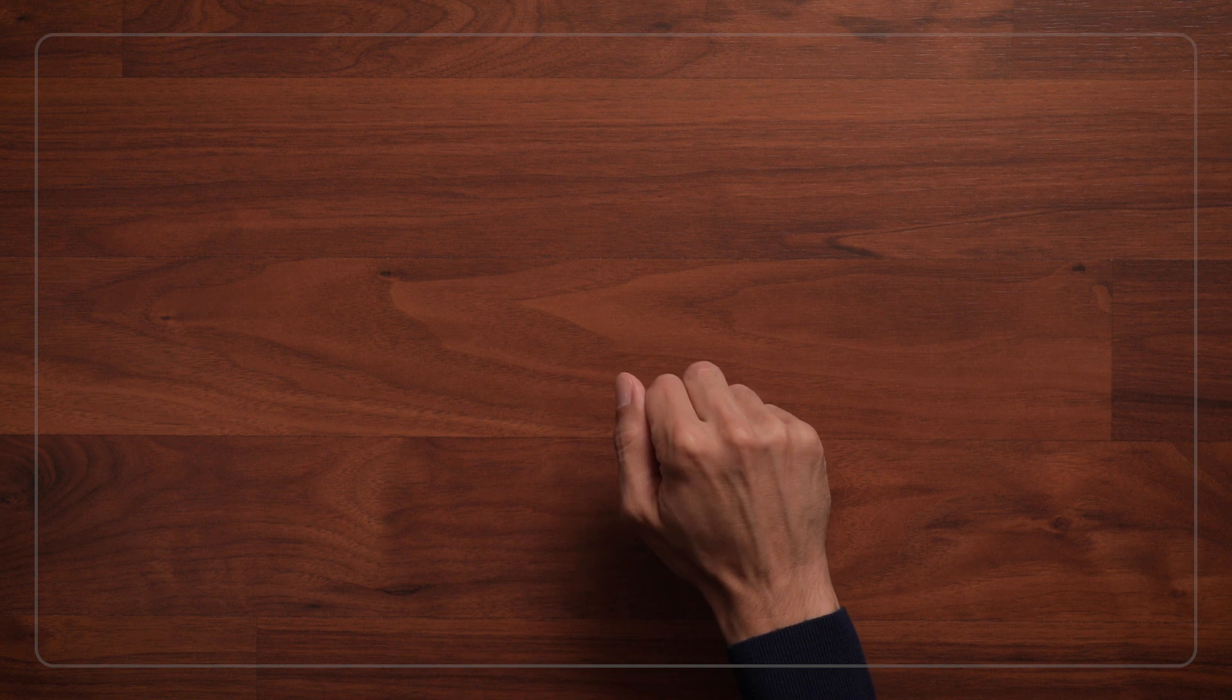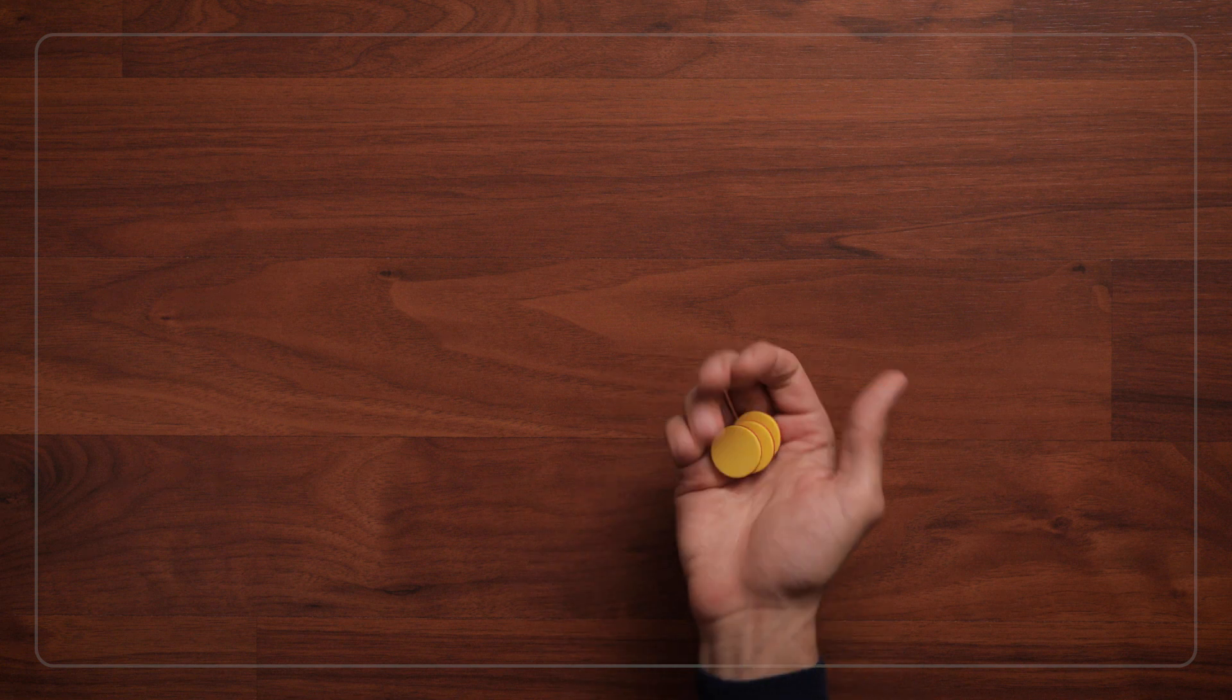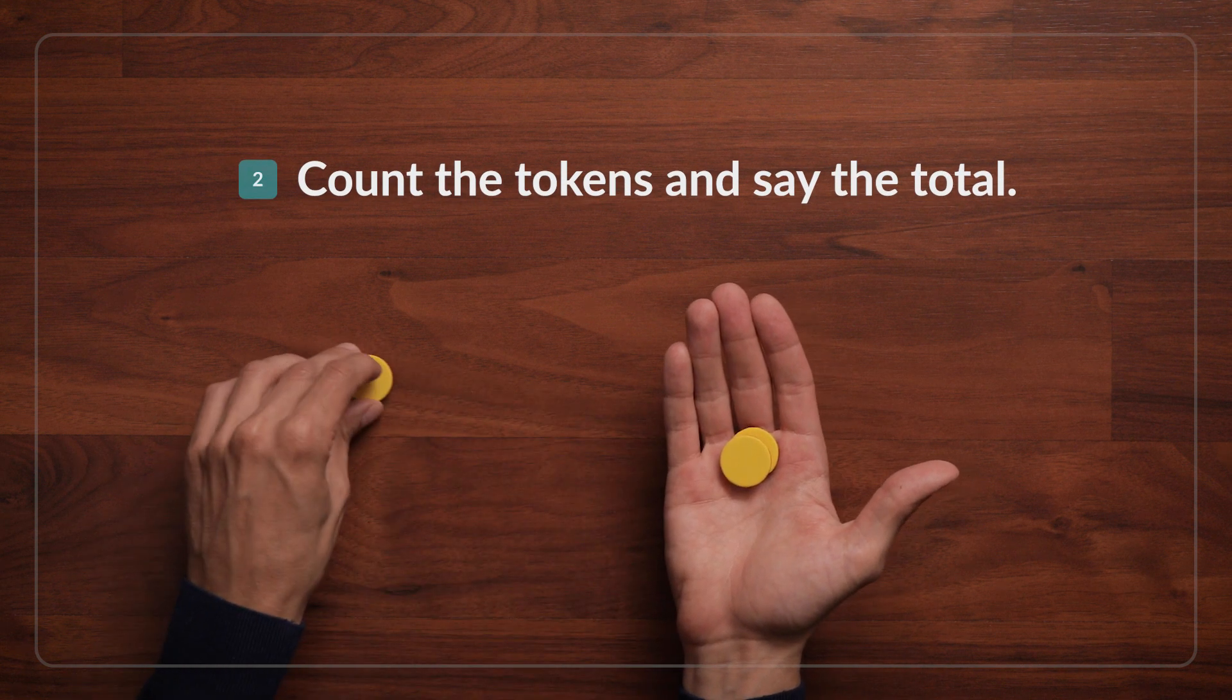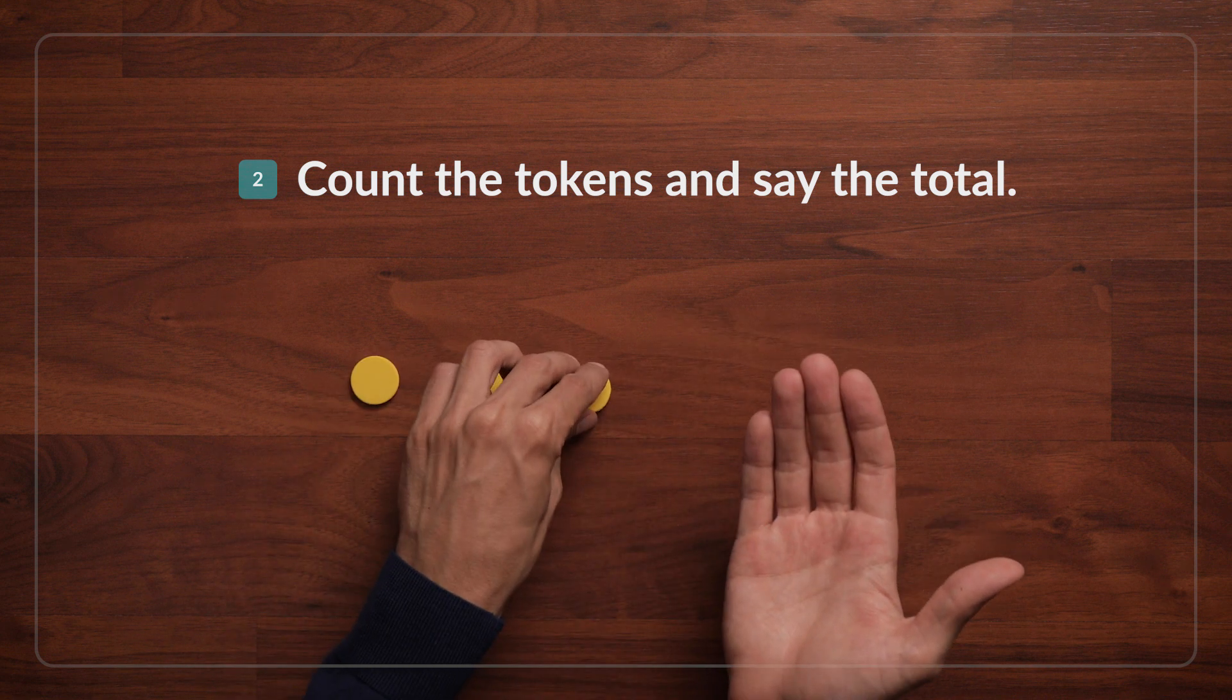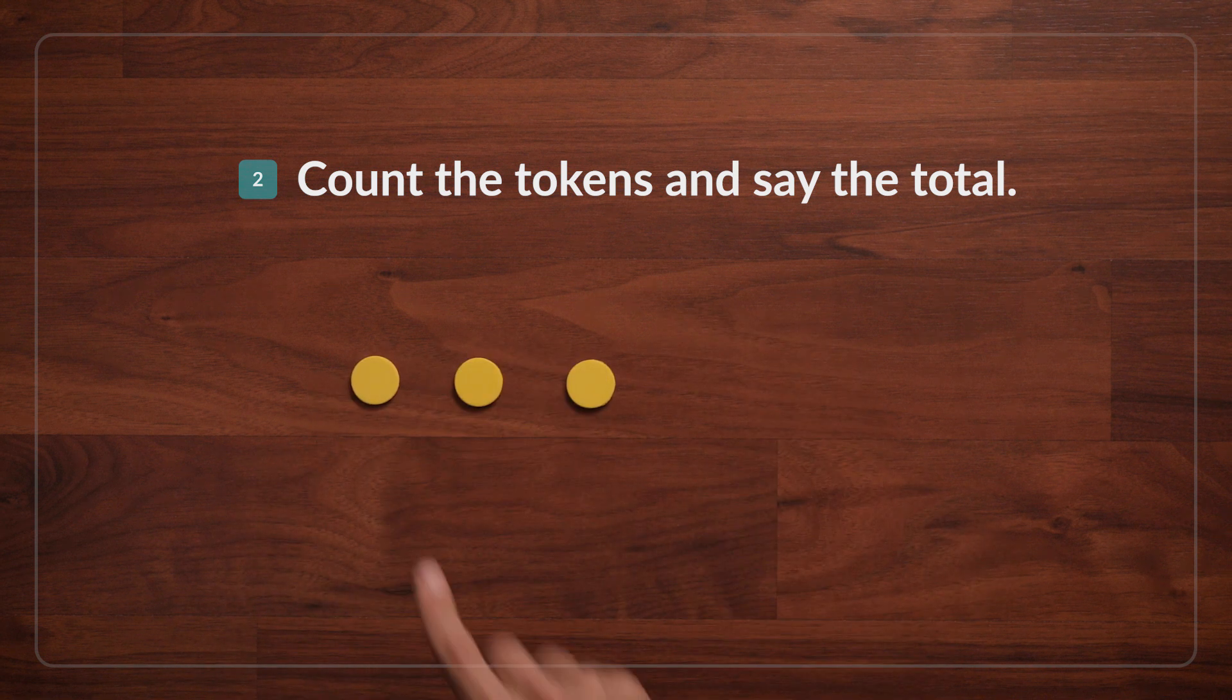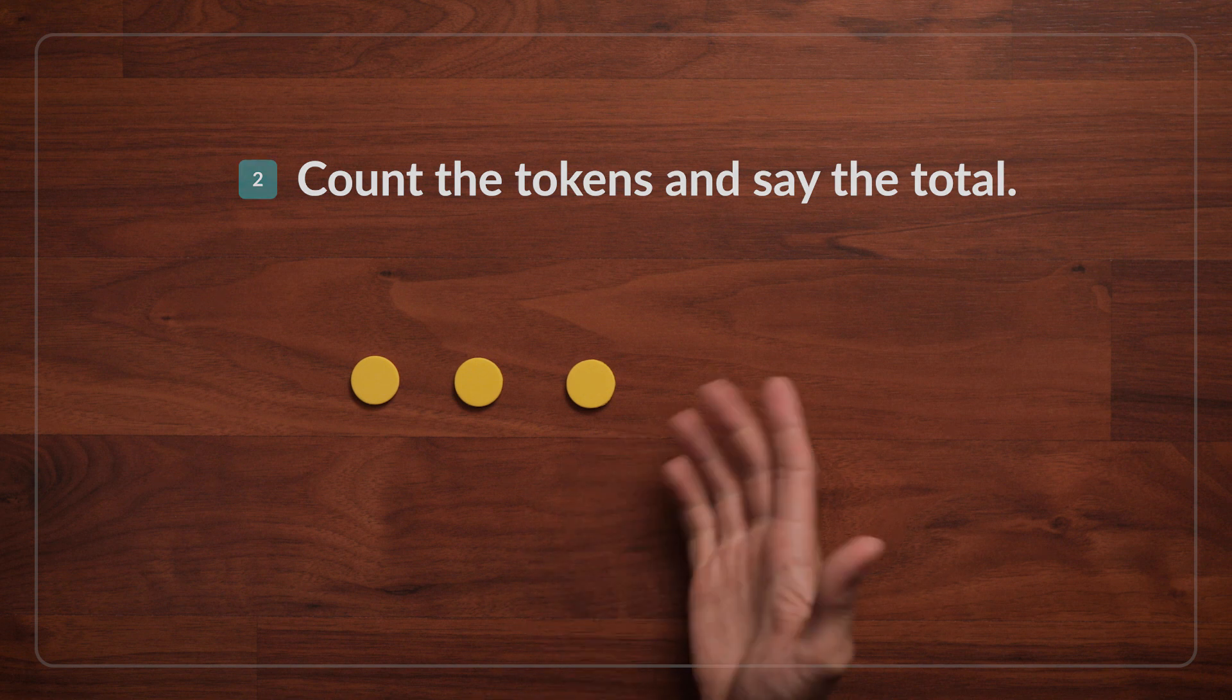So then I'll say, we're going to count together to find out how many I have in my hand. Ready? Let's count together. One, two, three. Look, I had three tokens in my hand. Three tokens, all together.